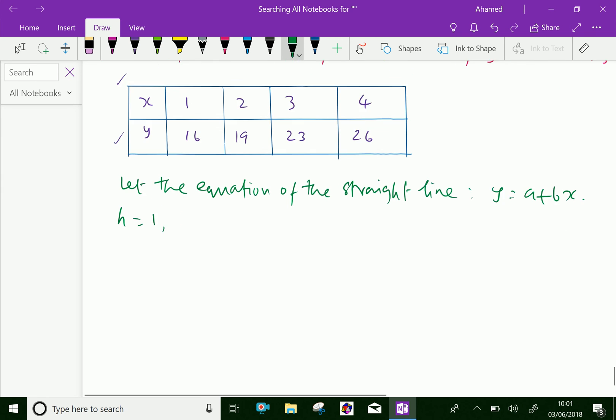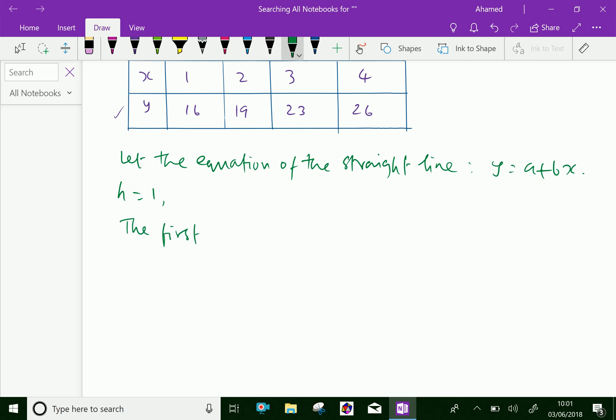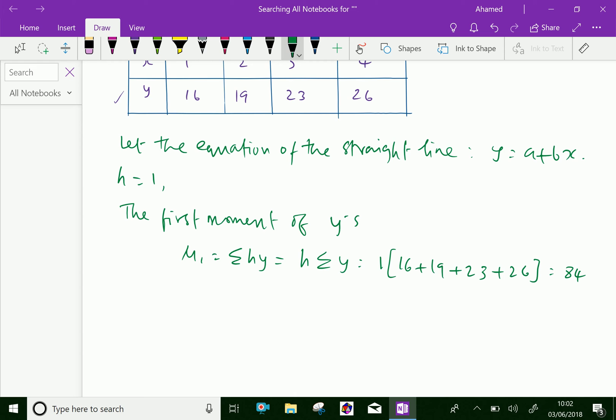Now the first moment of the observed values of y's are mu 1 which is equal sigma h y. Take h out of sigma, and h is 1 into the values of sigma y's which are 16 plus 19 plus 23 plus 26 which gives 84. Therefore we get mu 1 equal 84.